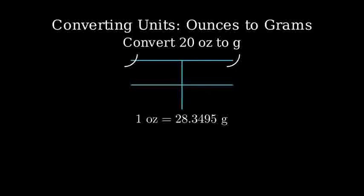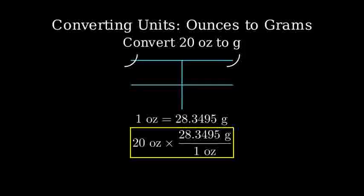One ounce equals 28.3495 grams. Let's solve this using dimensional analysis, also known as the factor label method. We'll start with 20 ounces and multiply it by our conversion factor, written as a fraction. Notice how we write the conversion factor so that ounces will cancel out, leaving us with grams.